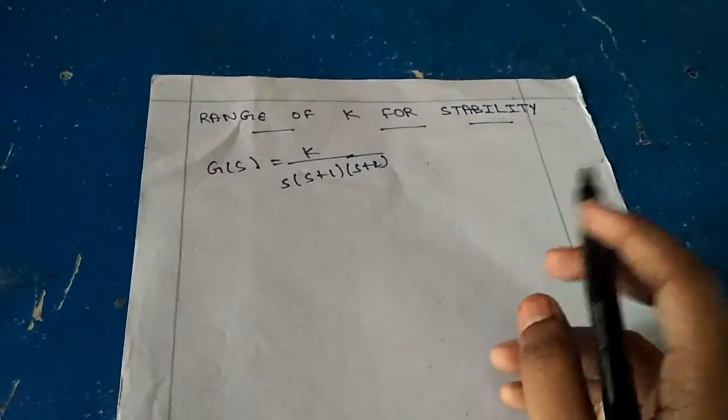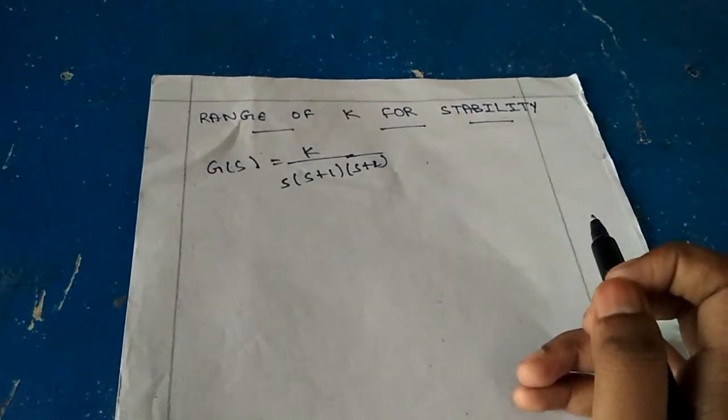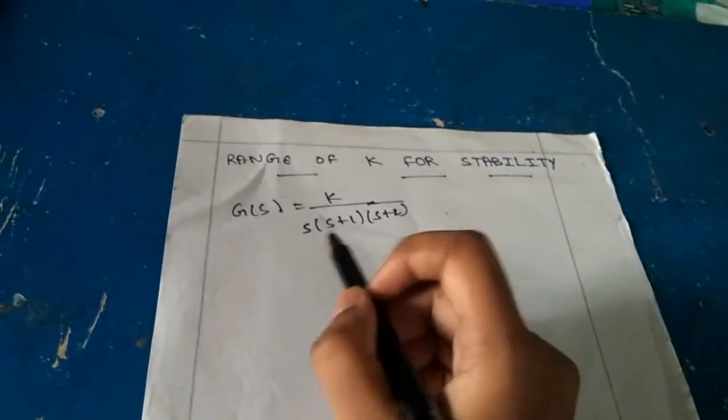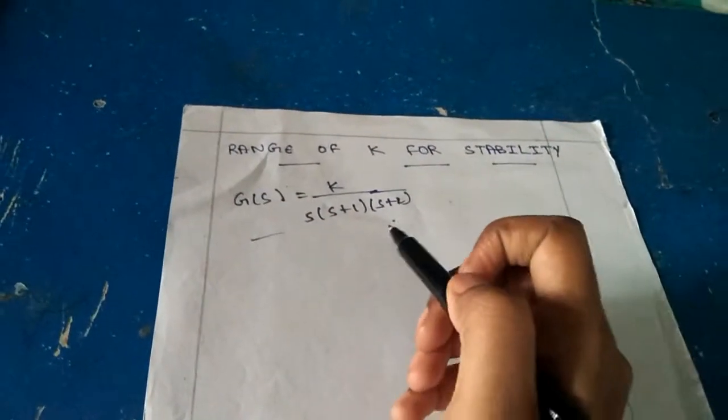The question may be asked like: determine the range of k for stability in a unity feedback system for the open loop transfer function g(s).